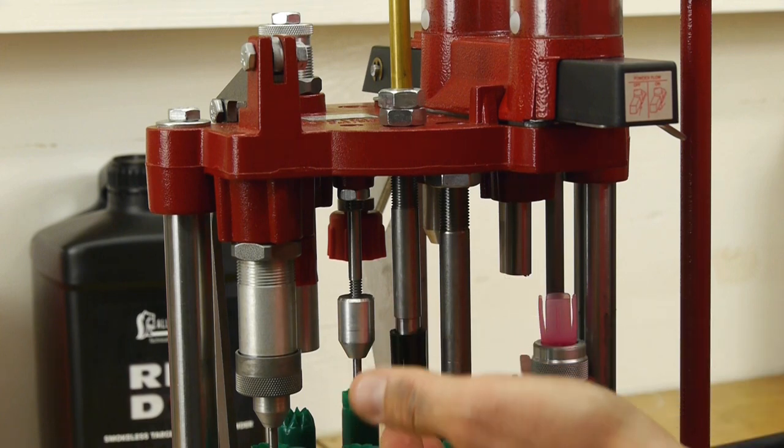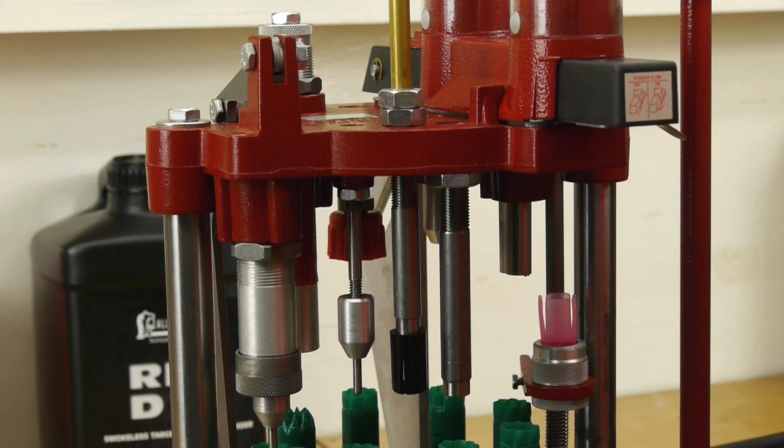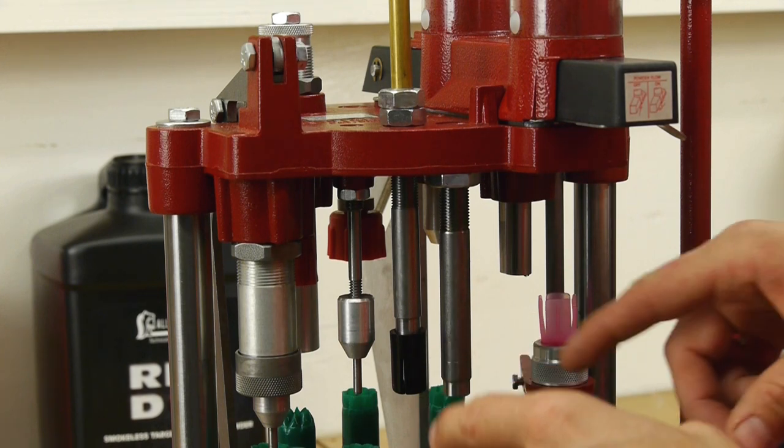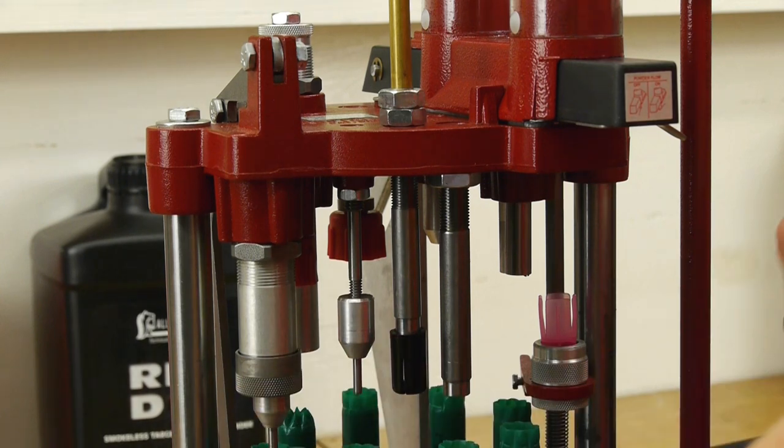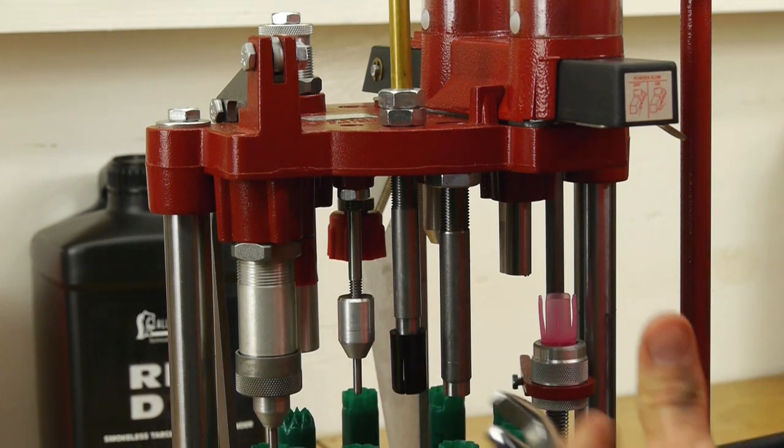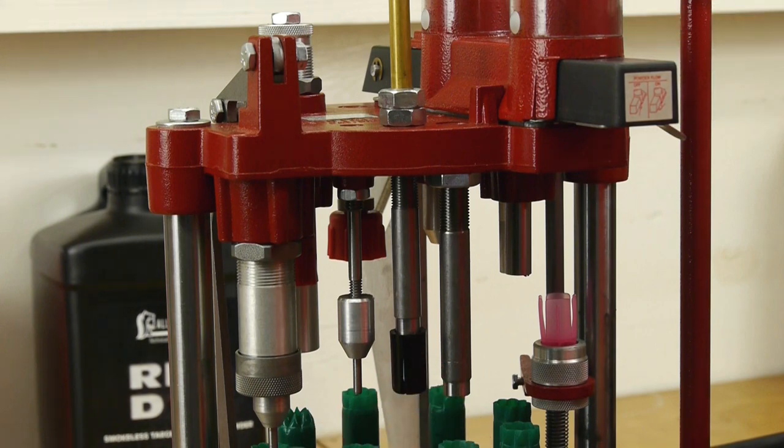Now what you want is to be able to shut the priming system off because if you're setting up the press if you don't have a way of shutting it off you basically get a whole bunch of extra primers that you have to pluck out by hand while the cartridge is going through the stations or if you're just adjusting the press and running it for whatever reason.